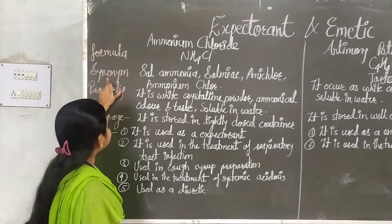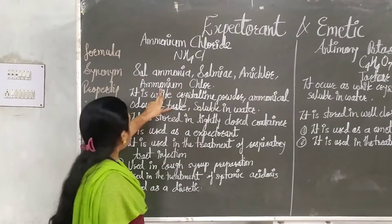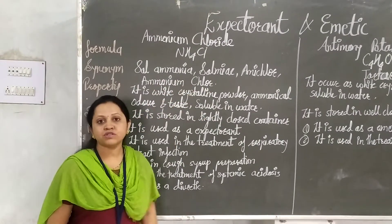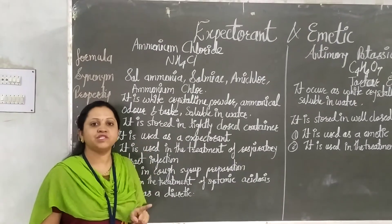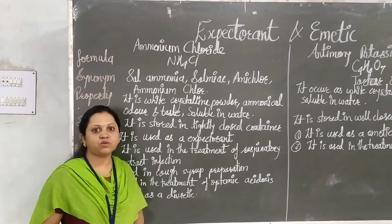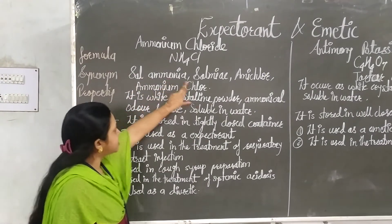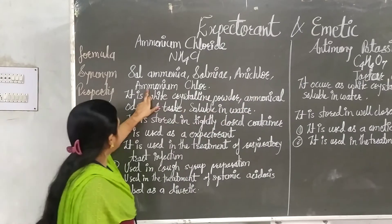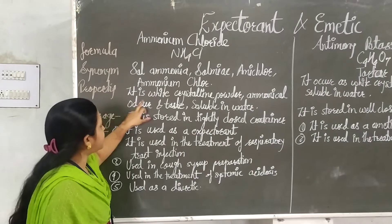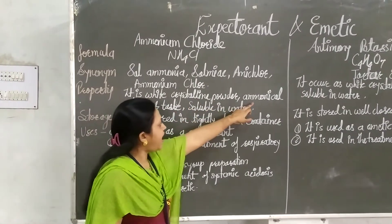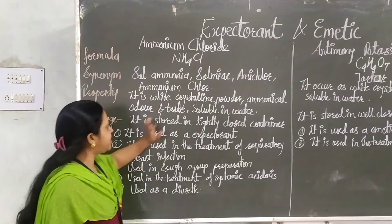Next is the synonym. What is the synonym? Ammonium, then sal ammoniac, then emiclore, ammonium chloride — these are the four synonyms of ammonium chloride. Properties: it is a white powder having an ammonium taste and odor, and it is soluble in water. The property is very simple.